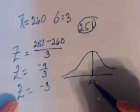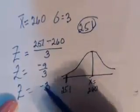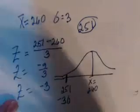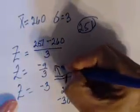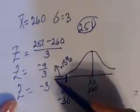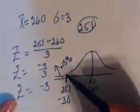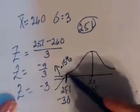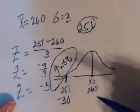A z-score of negative 3 means that on the normal curve, the mean is 260 and the number 251 is three standard deviations below the mean. Looking at the textbook, if you are three standard deviations below the mean, you only have a 0.15% chance of being in that region. In the problem, being below 251 means a defective part, so the probability of a defective part is 0.15%.